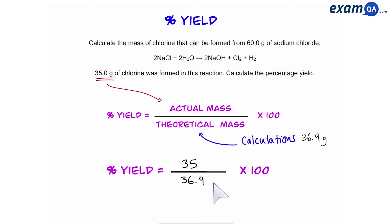So putting the numbers in gives us 35 over 36.9, which gives us a final answer of 94.9% yield. Remember, if you ever get more than 100% yield, that means you've probably put the numbers the wrong way around.